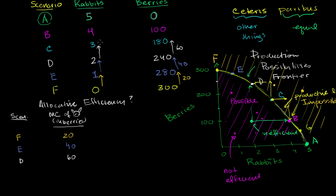You go to scenario C, the cost is now 80 berries. Finally, you go to scenario B, and the cost of sitting in scenario B — of getting one extra rabbit — you're going to have to give up 100 berries. I won't even go into scenario A, because it will be impossible to have any more rabbits, and you have no more berries to give up. So these are all the possible scenarios and the marginal costs of them.